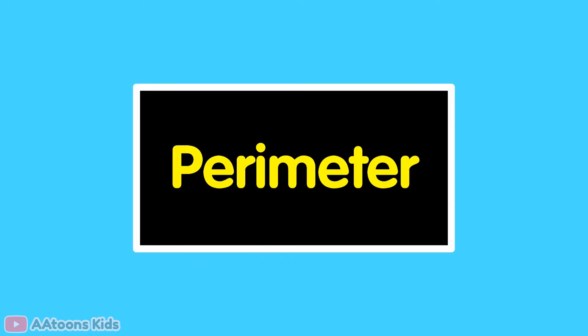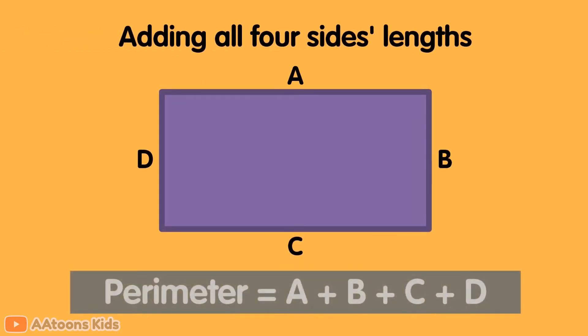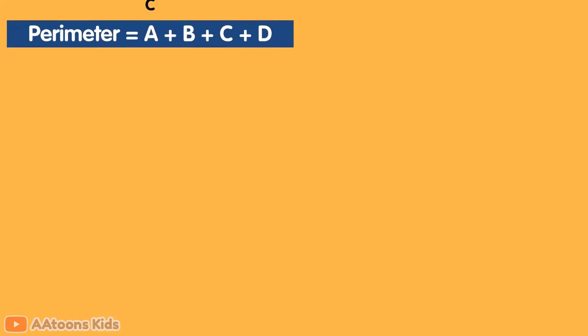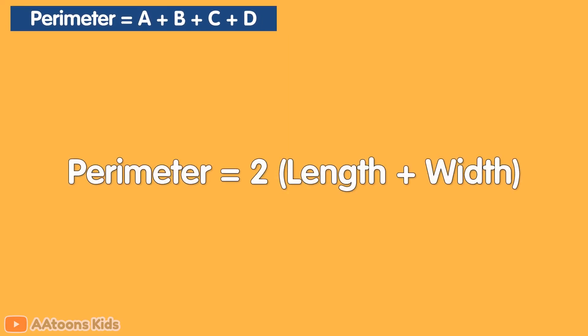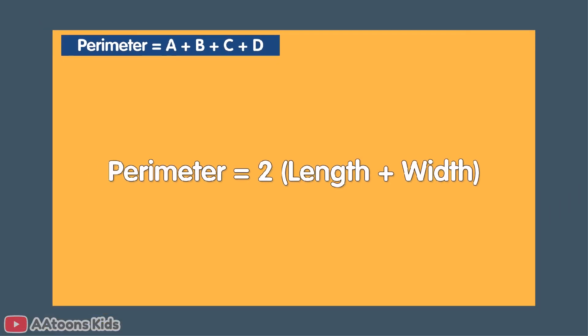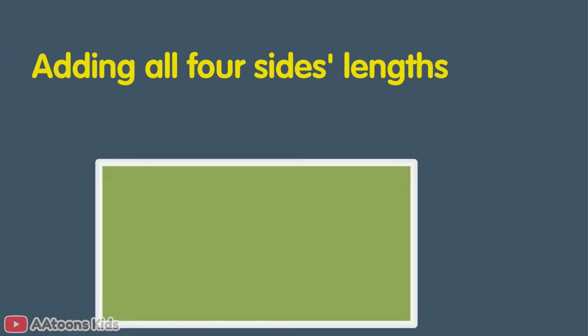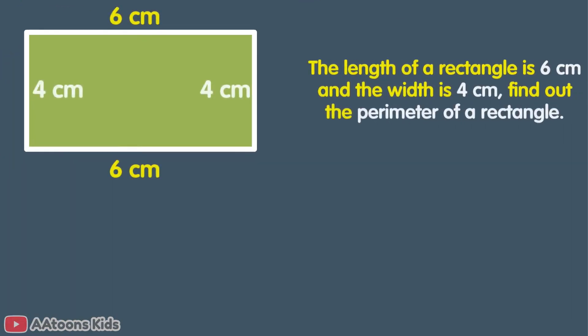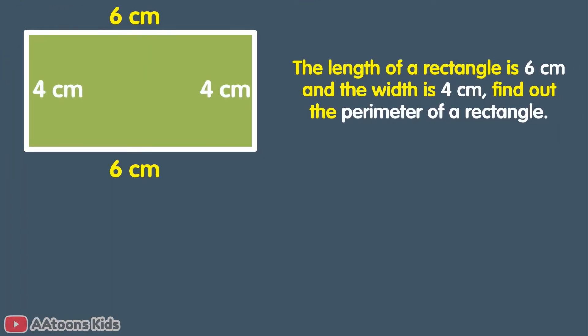Perimeter. The perimeter of a rectangle is calculated by adding all four side lengths, or you can use the formula 2 times (length plus width). Let's understand this by an example: the length of a rectangle is 6 cm and the width is 4 cm. Find the perimeter of the rectangle.